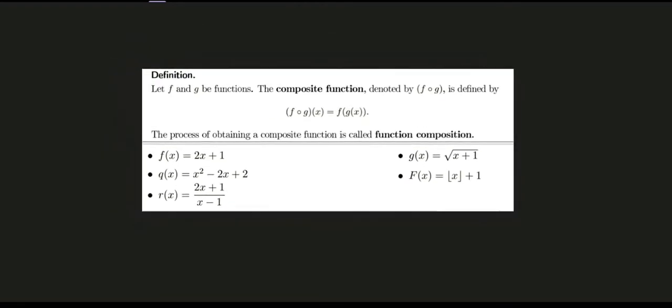So I have a different set of functions here and let's try to solve composition. We have f(x) = 2x + 1, q(x) = x² - 2x + 2, r(x) = (2x + 1)/(x - 1), g(x) = √(x + 1), and capital F(x) = floor(x) + 1.